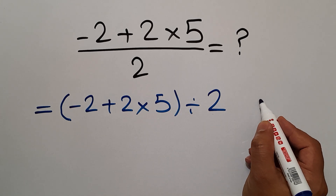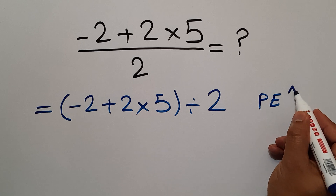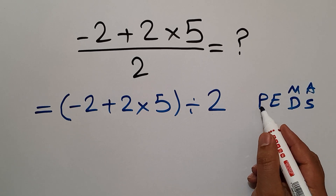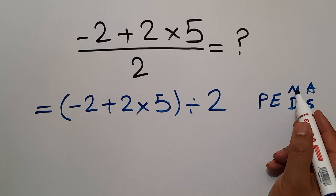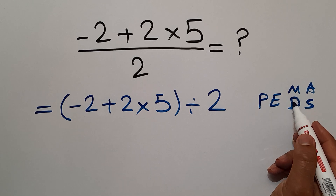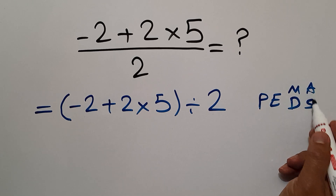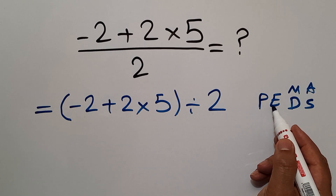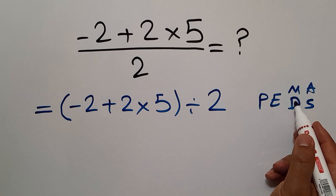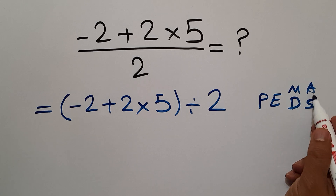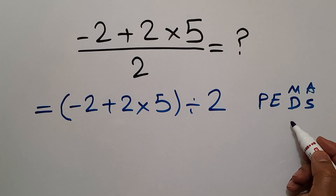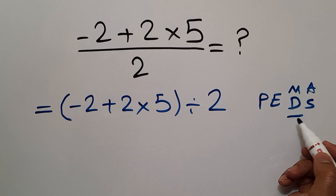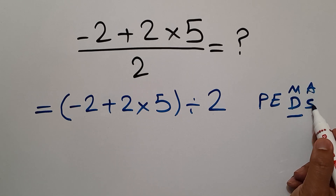According to the order of operations, which is PEMDAS: P stands for parentheses, E stands for exponents, M and D stand for multiplication and division, and A and S stand for addition and subtraction. We do parentheses first, then exponents, then multiplication or division, and finally addition or subtraction. Remember that multiplication and division have equal priority and we go left to right, and the same applies to addition and subtraction.